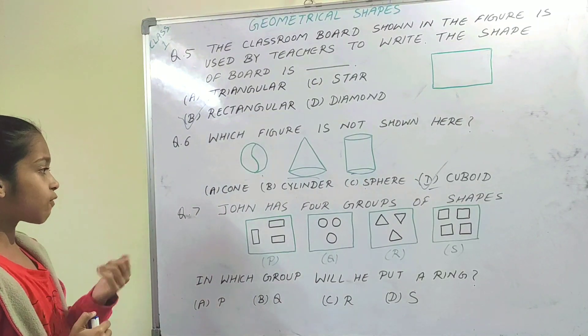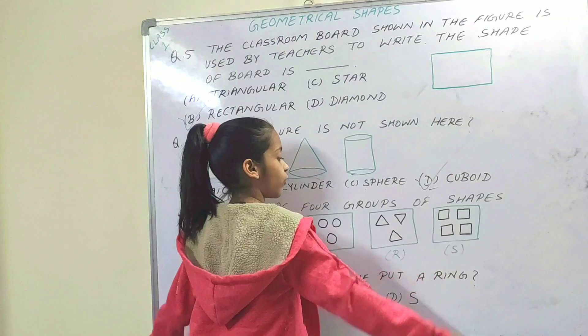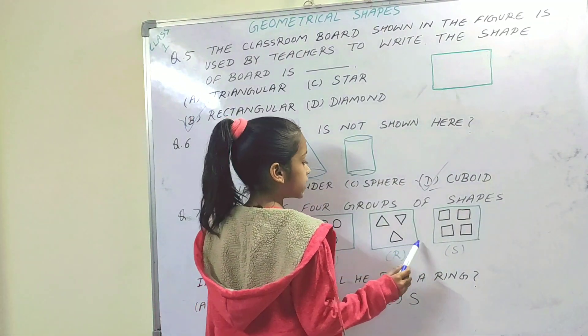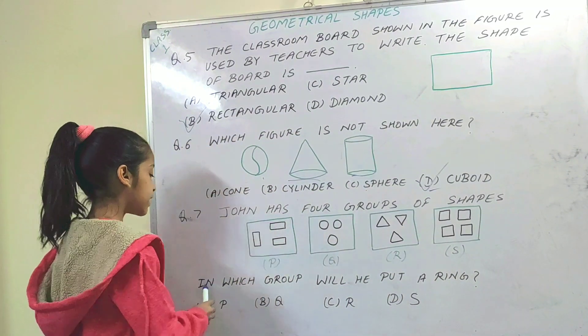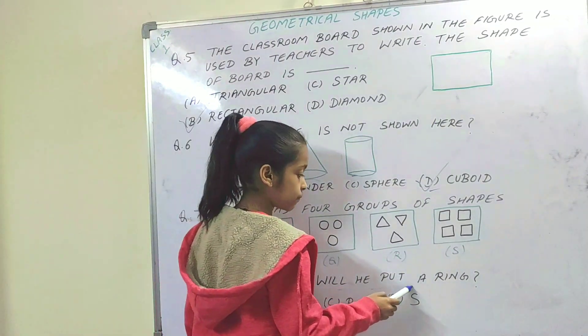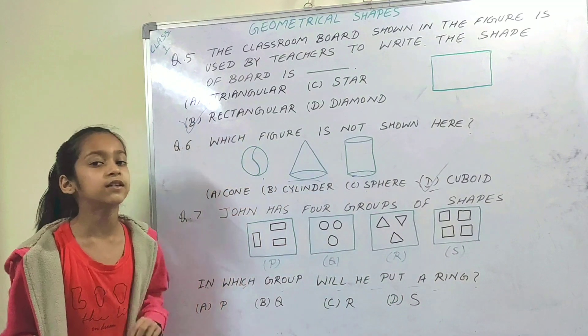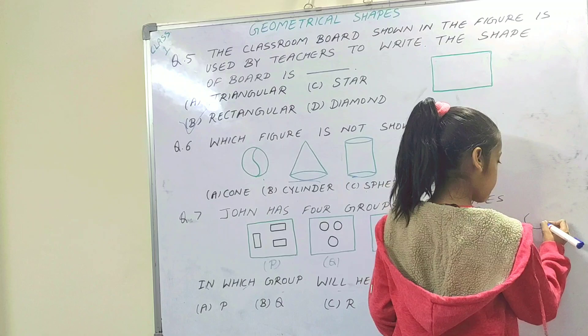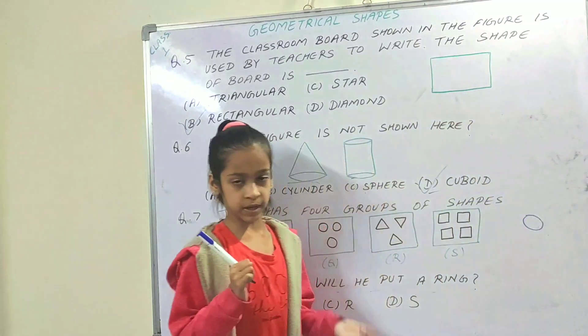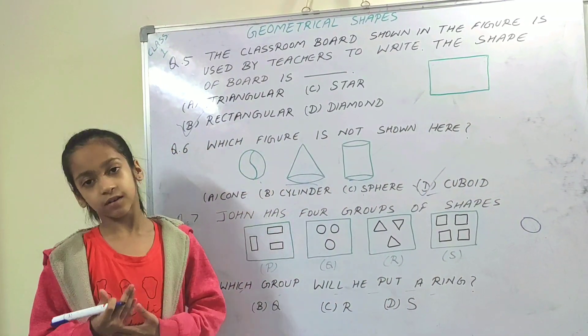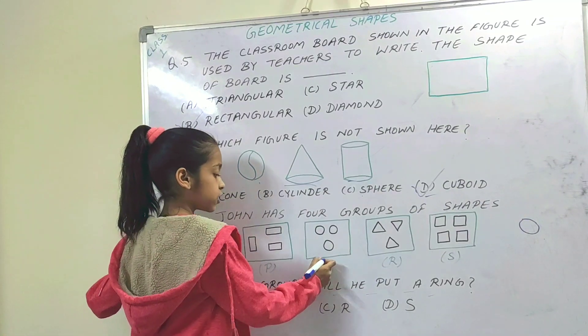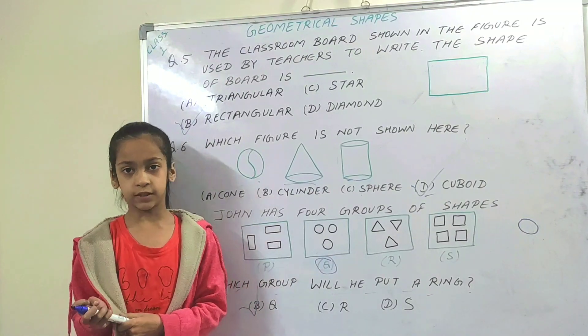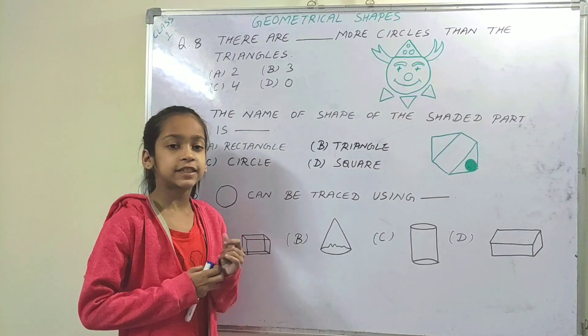Next question. John has four groups of shapes. These are four groups of shapes. One is triangle, one is circle, one is triangle, and one is square. In which group will he put a ring? Now where is the shape of the ring? The ring is a circle shape. So this is the circle group. Next question.